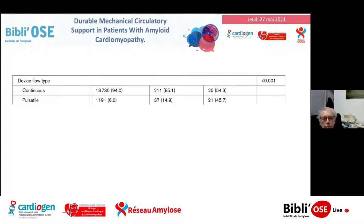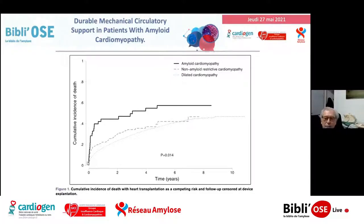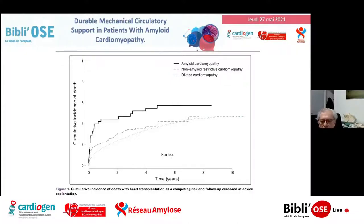Quand on regarde les courbes de mortalité — amyloïdes versus non-amyloïdes dilatées — on voit qu'à l'ablation du matériel, théoriquement rendue possible par une transplantation, la mortalité est de l'ordre de presque 40%, ce qui est très différent des autres, et en particulier des dilatées. Ceci explique que le bridge à la transplantation dans les dilatées est quelque chose qui est passé dans le domaine commun, mais pas dans les amyloses.